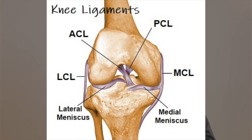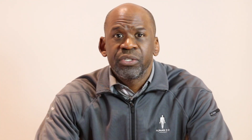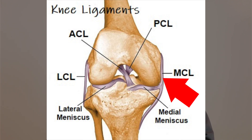The ACL resists posterior translation of the femur off the back of the tibia — meaning it stops the thigh bone from sliding off the back of the shin bone — so it is damaged with hyperextension of the knee. The MCL resists the valgus opening of the knee, stopping the knee from opening sideways towards the midline, so it is damaged when the knee collapses inward.